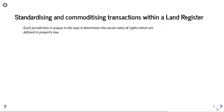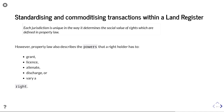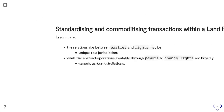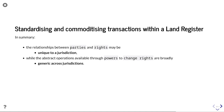Getting back to the main thrust of this presentation — standardising and commoditising transactions within a land register. Each jurisdiction is unique in the way it determines the social value of rights defined in property law. However, property also describes the powers that a right holder has to grant, licence, alienate, discharge, or vary the right they hold. In summary, the relationship between parties and rights may be unique to a jurisdiction, while the abstract operations available through powers to change rights are broadly generic across jurisdictions.